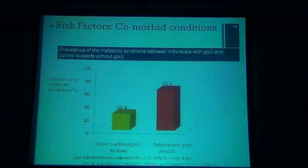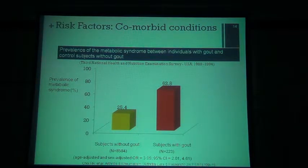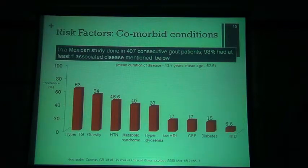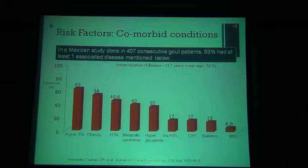From a US national survey, subjects with gout had a 62.8% prevalence of metabolic syndrome — obesity, insulin resistance, hypertension — compared to 25% in the general population. A Mexican study similarly identified that at least one of the following was seen in people with gout: high cholesterol, obesity, hypertension, hyperglycemia, low HDL, chronic renal impairment, and diabetes. So once again, always think about comorbid conditions in people with gout.